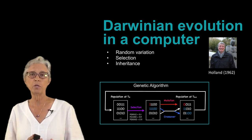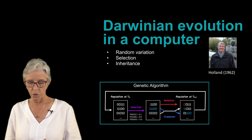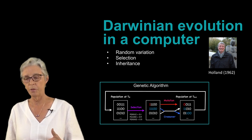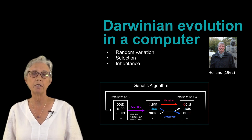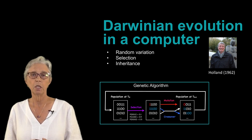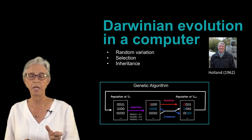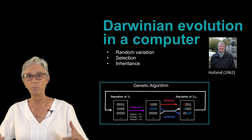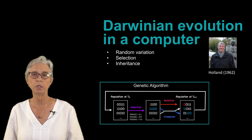So imagine that we start out—and this is in the leftmost panel of the figure—imagine that we start out with a population of randomly generated individuals or strings. Here we only have three shown and they each only have five bits, but in real genetic algorithms we would have more bits and larger populations.